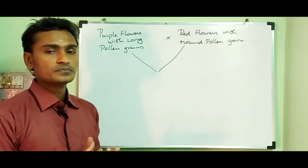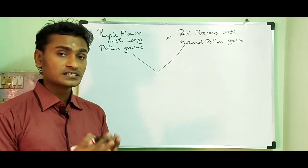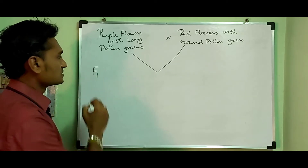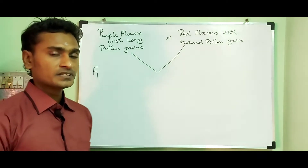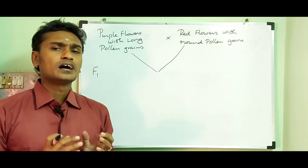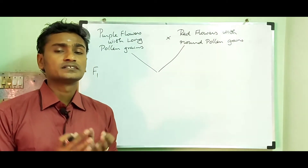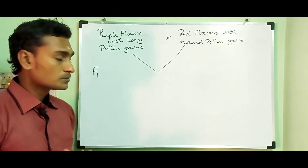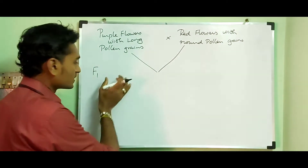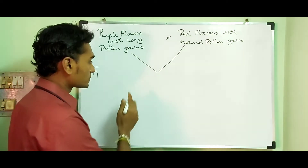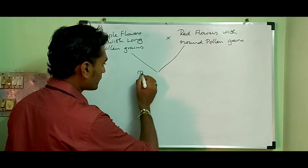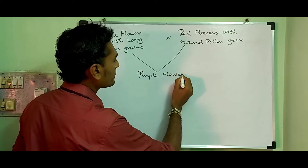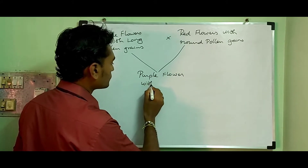Gametes were formed and fusion of gametes took place, resulting in the F1 generation. In the F1 generation, all the progenies had the phenotype purple flower with long pollen grain.